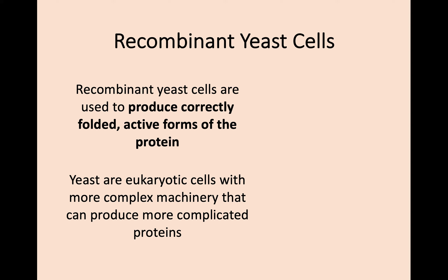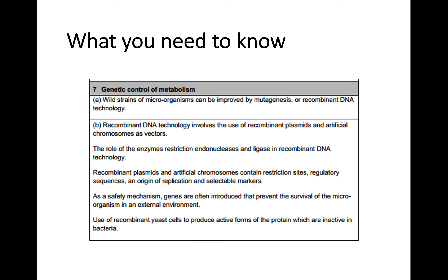The way around this is to use recombinant yeast cells. Yeast cells are eukaryotic but can also have plasmids, making them a nice mixture between prokaryotes and eukaryotes. Using a yeast cell can produce correctly folded proteins in their active form. Since yeasts are eukaryotic and based on more complex cellular machinery, they are able to handle and produce more complicated proteins. This is why you would use a yeast cell as a host microorganism rather than bacteria.